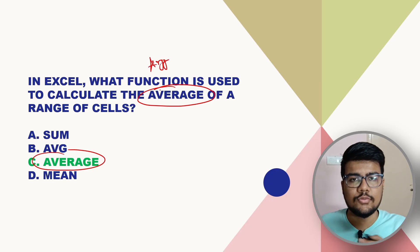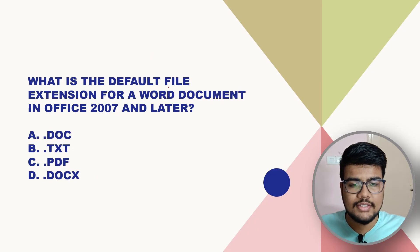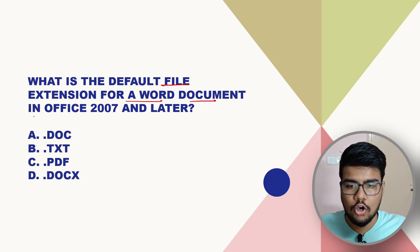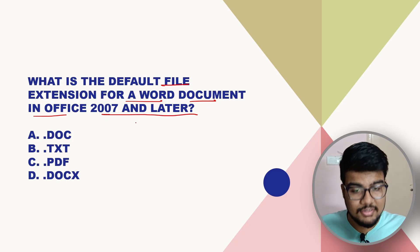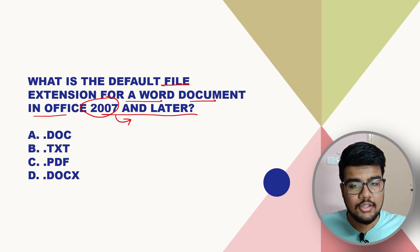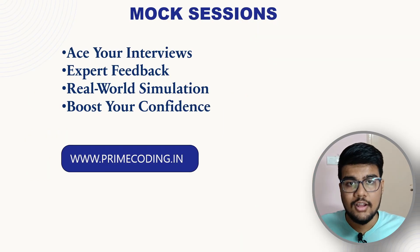What is the default file extension for a Word document in MS Office 2007 and later? This question has been repeated multiple times. The answer is .docx — that is the correct file extension for Word documents from Office 2007 onwards.